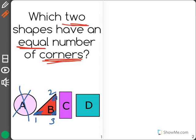Next I see that C has four corners. Shape D also has four corners.